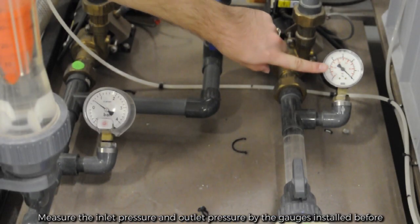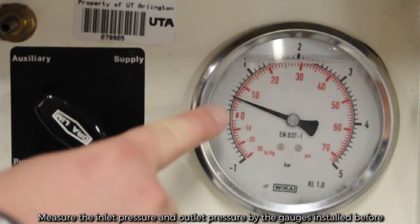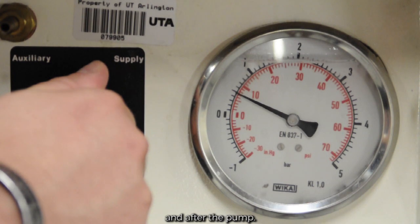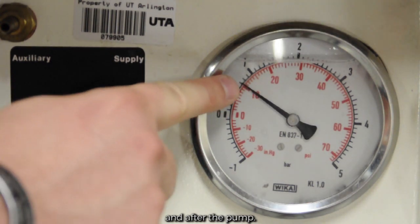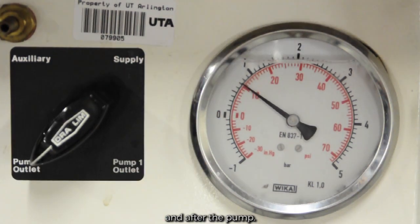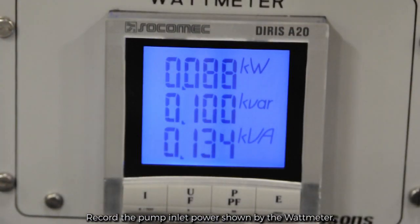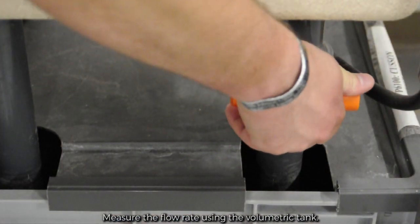Measure the inlet pressure and outlet pressure by the gauges installed before and after the pump. Record the pump inlet pressure shown by the wattmeter. Measure the flow rate using the volumetric tank.